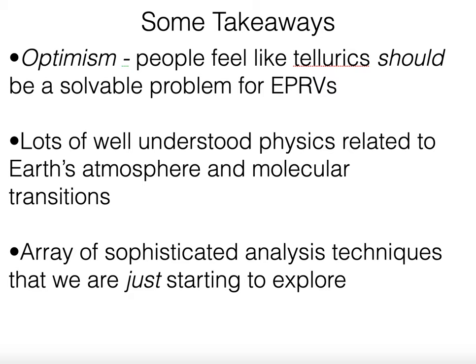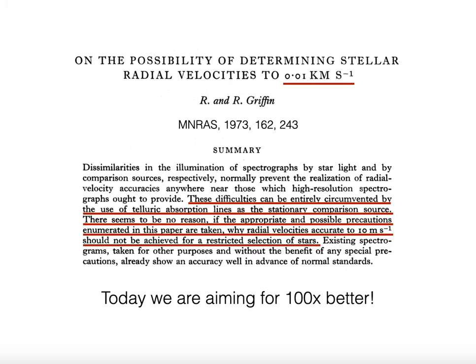I feel a sense of optimism when thinking about how to deal with telluric absorption in EPRV measurements. People feel like this problem should be solvable, in part because there's lots of well-understood physics related to Earth's atmosphere and molecular transitions, and there are sophisticated analysis techniques such as PCA or full-on forward modeling that we're really just starting to explore. Tellurics have been part of the EPRV game from the very start—Griffin and Griffin in 1973 were already proposing to use telluric oxygen lines as a simultaneous wavelength reference. Now in 2020, we're talking about mitigating these lines to achieve radial velocity precisions 100 or more times better.